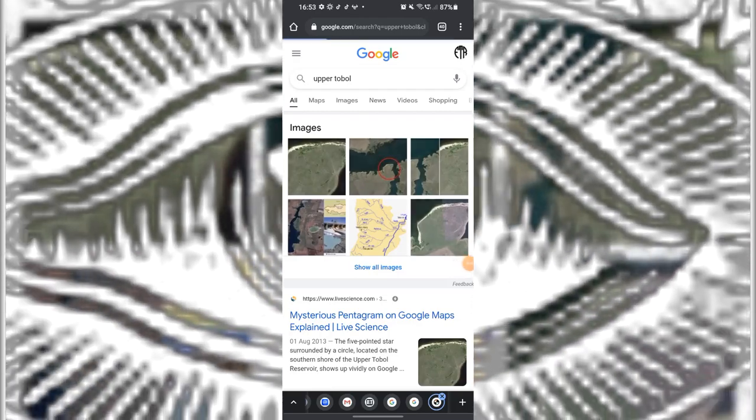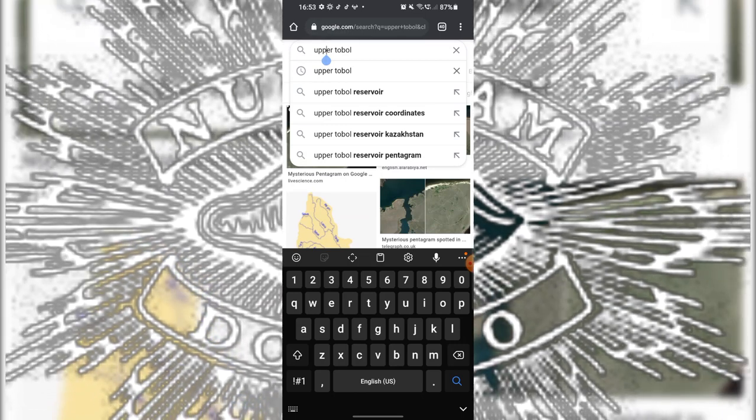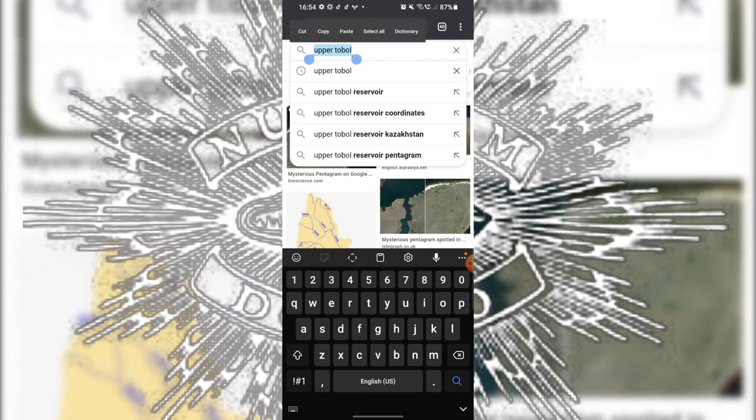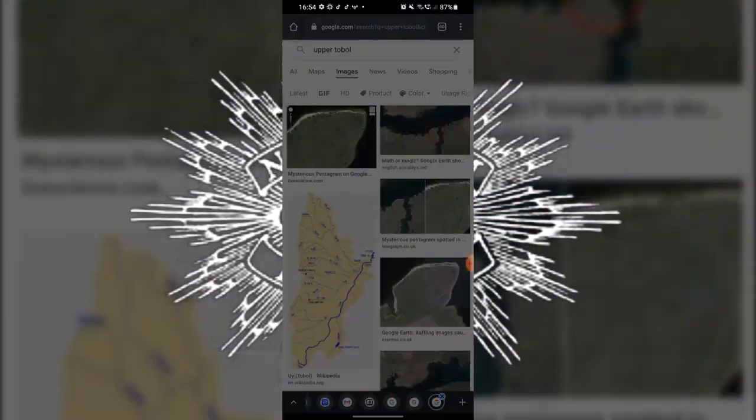So this is a giant pentagram in the middle of nowhere, right? This is nothing new. As you can see, it got a lot of coverage back in 2013, around the same time we all started waking up. Now if you read these articles, you find nothing but fluff because they don't want the truth to come out.